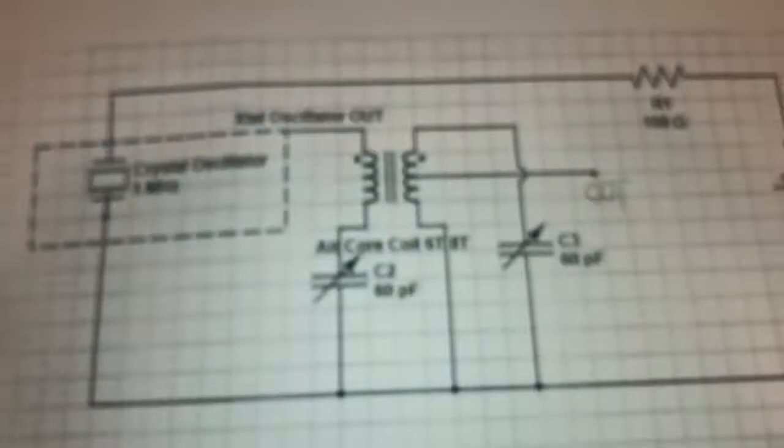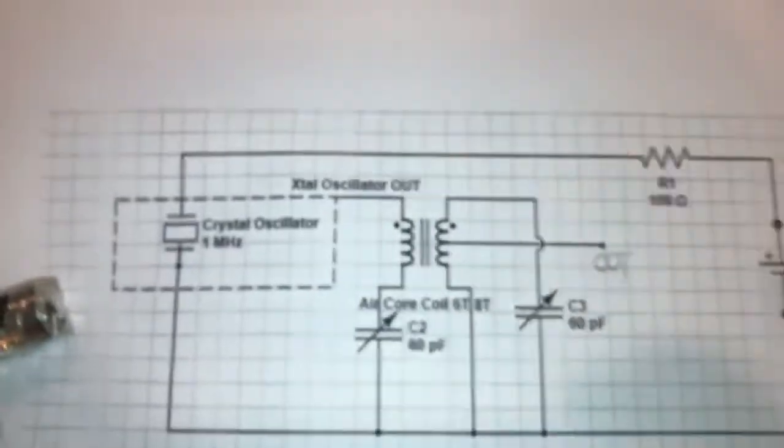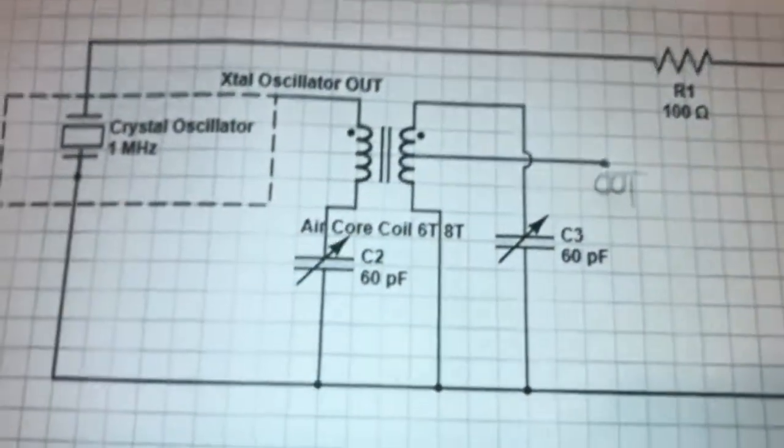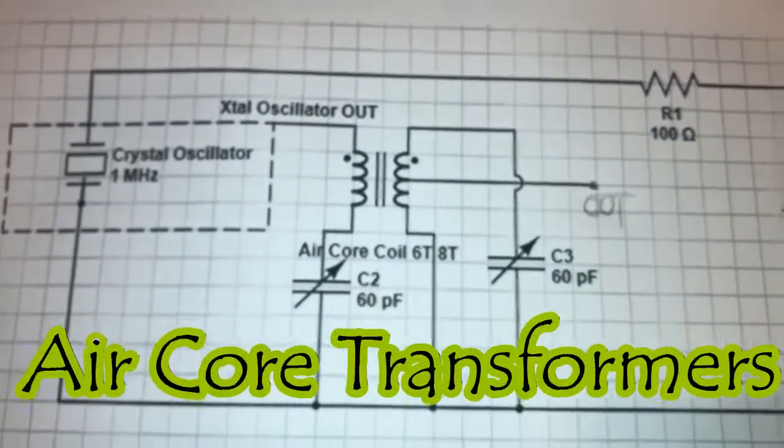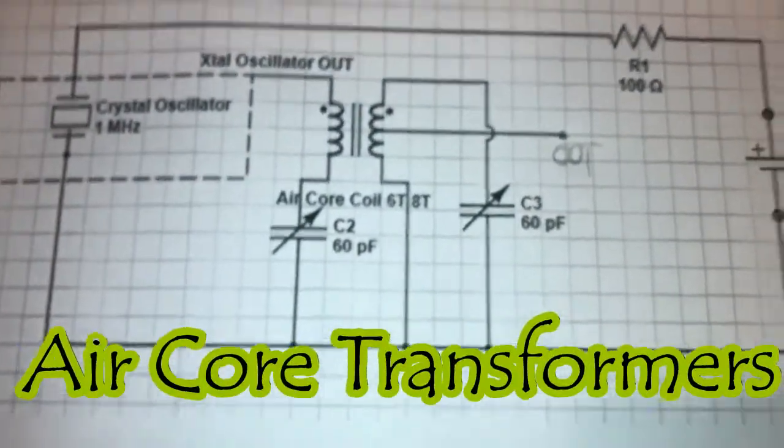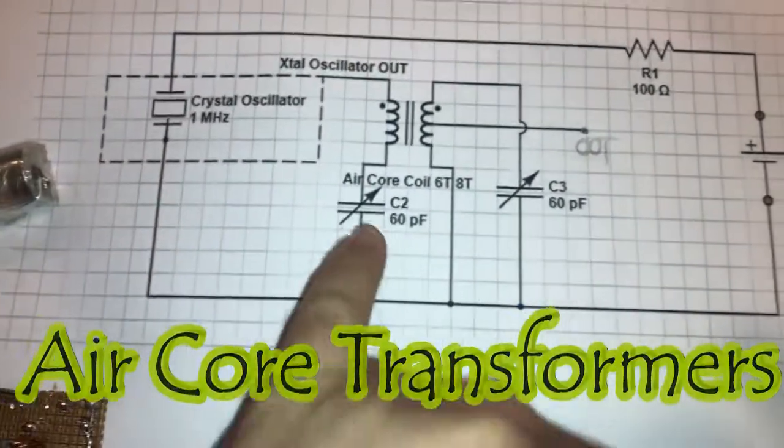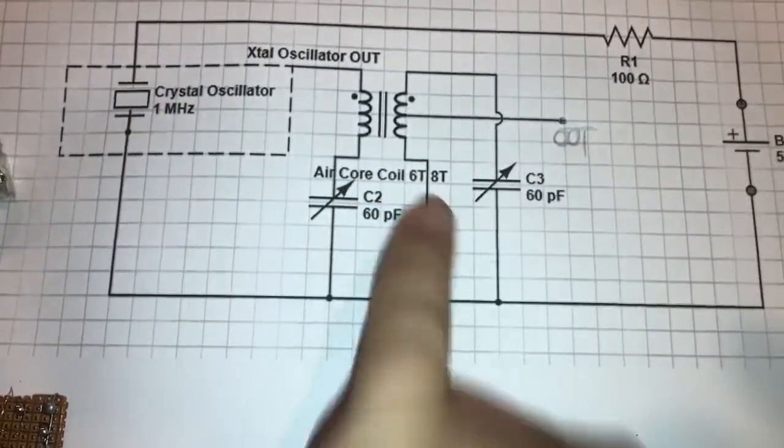One more time, take a look at the schematic. As you can see, this is an air core transformer. The symbol is not right in there, but here is text which will help you.